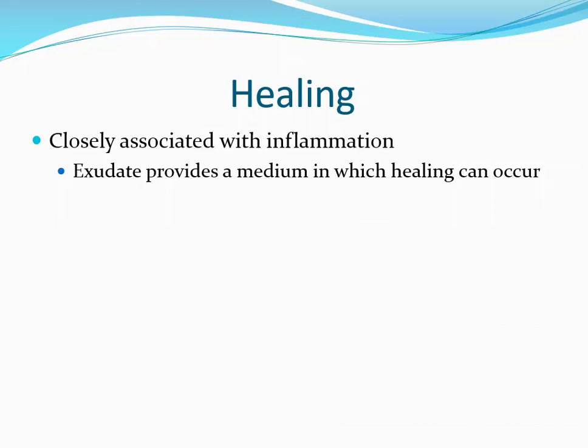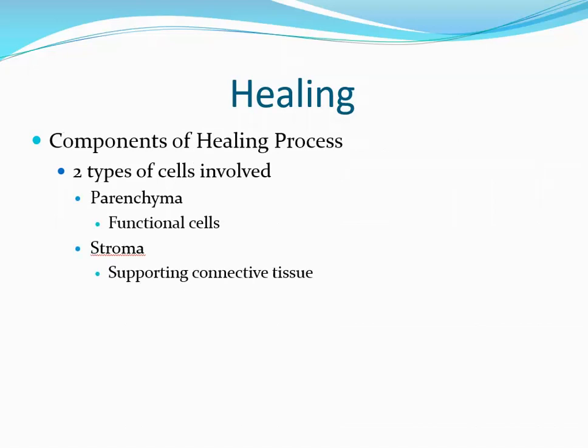Lastly, we need to look at the healing process, which is closely associated with inflammation. The exudate formed through inflammation provides a medium in which healing can occur. There are two types of cells involved: parenchymal cells, which are the functional cells of the tissue, and stroma, which are the supporting connective tissue. For example, in the liver, parenchymal cells would be hepatocytes and stroma would be the connective tissue holding them together. In the skin, parenchymal cells are the epithelial layer and stroma are the dermis and hypodermis.